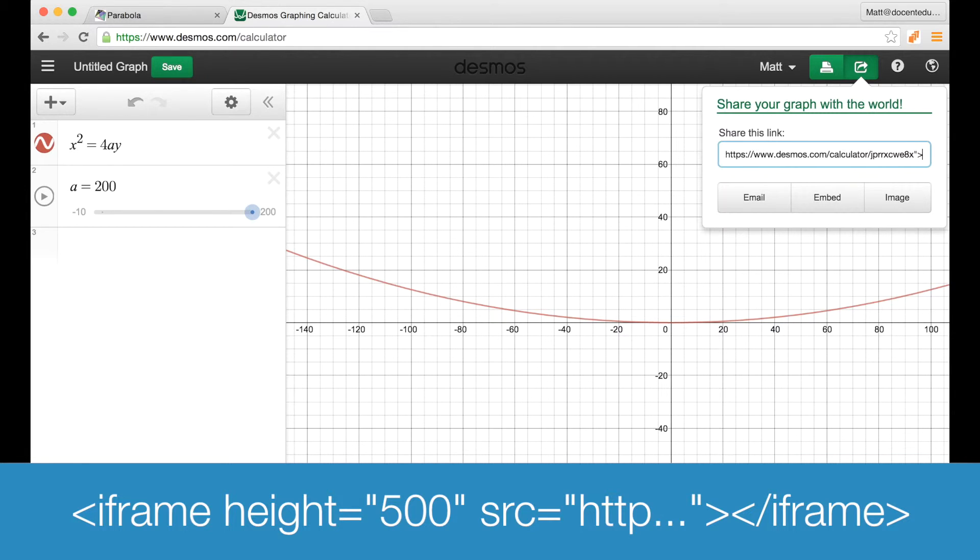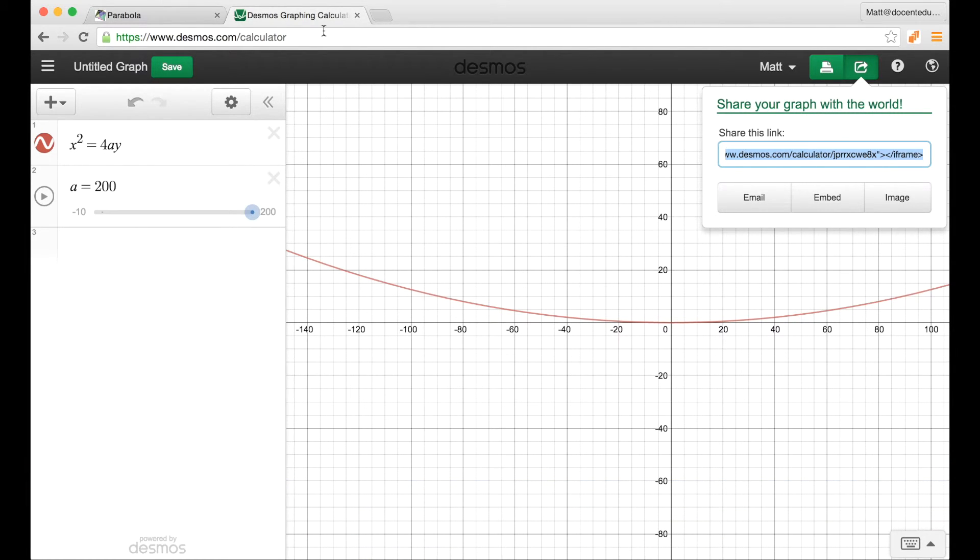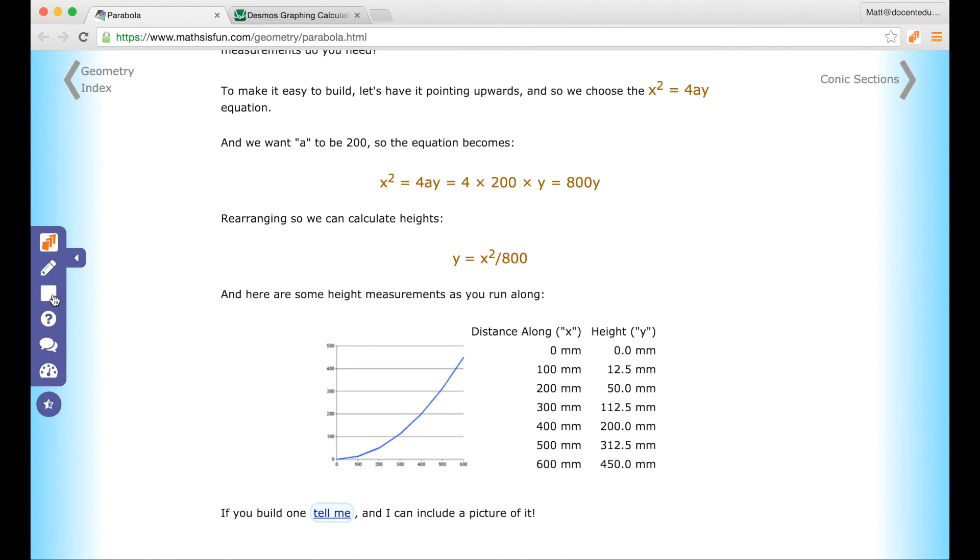Closing parenthesis closing bracket and now we have to close our iframe. So open bracket and then we're going to backslash iframe and close that. Okay there we go. So this is our iframe code. Way to go everybody. You just did some coding. We're going to copy that and heading back over to our Math is Fun.